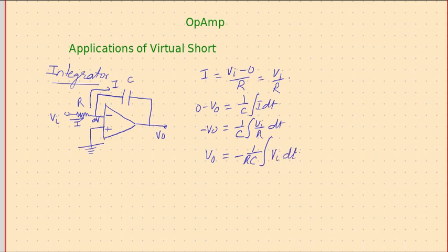So the output voltage is proportional to the integration of VI DT. So the output will be an integrated version of the input voltage. This way we can integrate any given input.